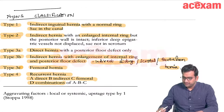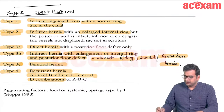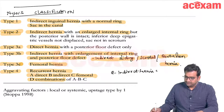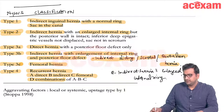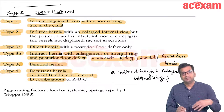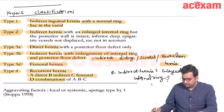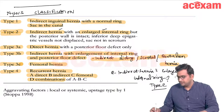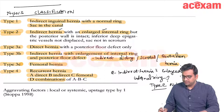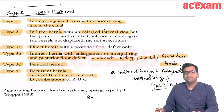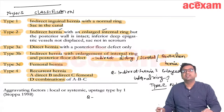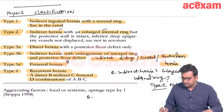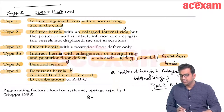Two important questions frequently asked from the Nyhus classification: First, indirect hernia with enlarged internal ring — the answer is Nyhus type 2. Second, recurrent hernias are Nyhus type 4, and femoral hernias are Nyhus type 3c. These are high-yield MCQ topics.